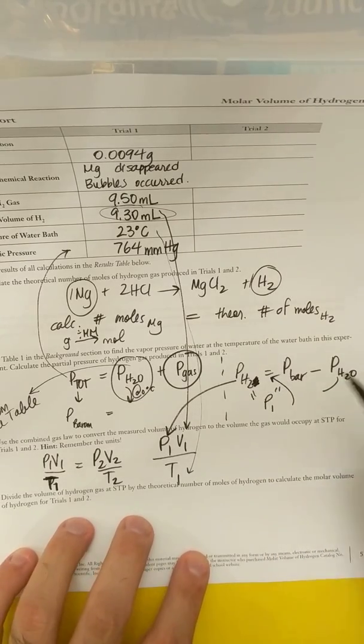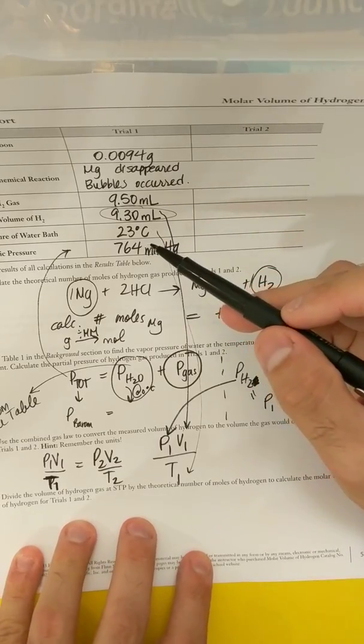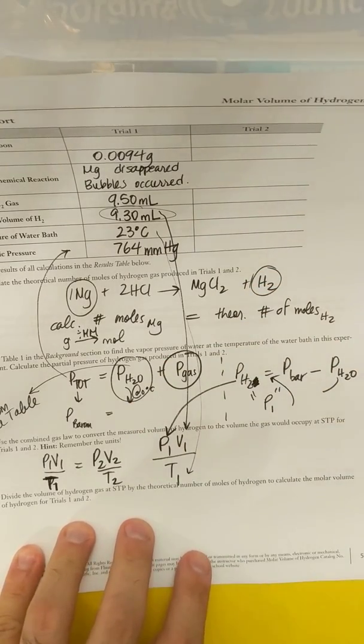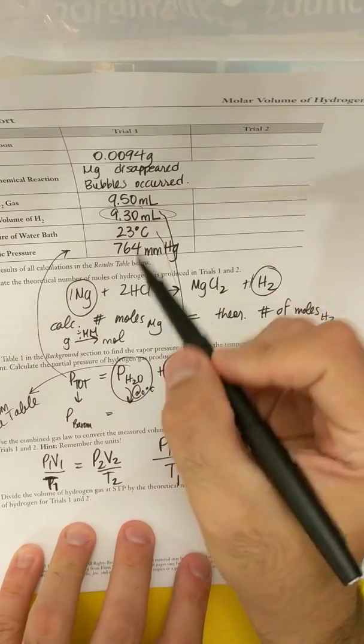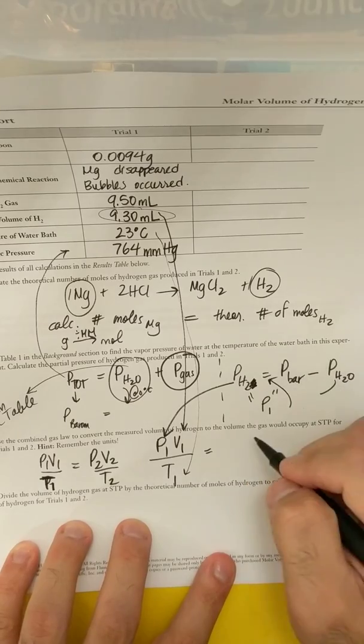V1 is whatever volume you collected. T1 is whatever temperature that your reaction happened. Most of yours happened at zero. For this example, this happened at 23 degrees Celsius. And then P2, P2 is equal to one atmosphere.